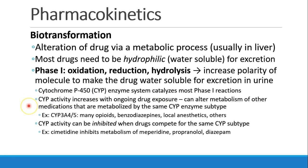The cytochrome P450 system is a very important metabolic set of enzymes. As patients have ongoing exposure to a certain drug, they can start to get increased activity of this system. This can alter the metabolism of other medications metabolized by the same enzyme subtype. For example, the cytochrome P450-3A4 and 3A5 subtypes are responsible for metabolizing a lot of opioids, benzodiazepines, local anesthetics, and some other drugs. If a person is chronically exposed to benzodiazepines, they may have ramped up activity of this enzyme subtype, causing other drugs to be metabolized more quickly.